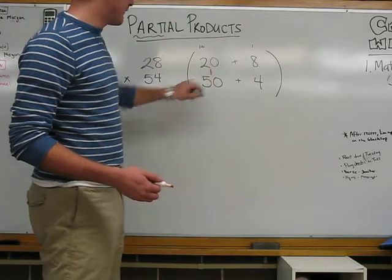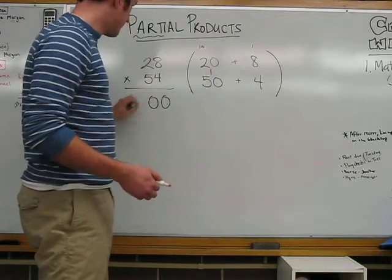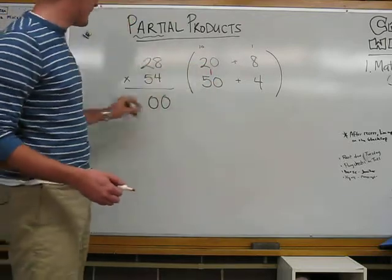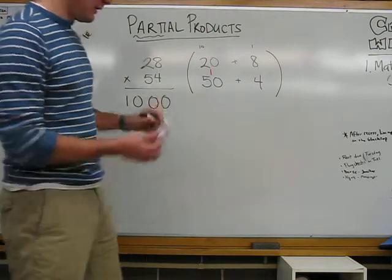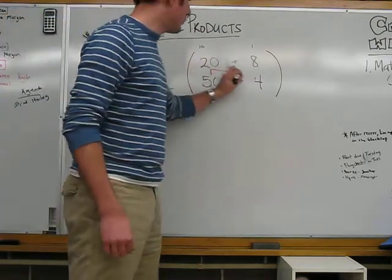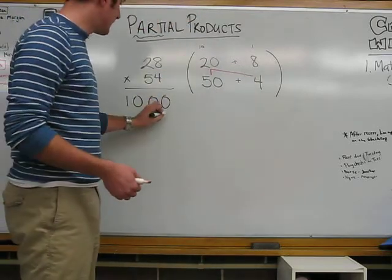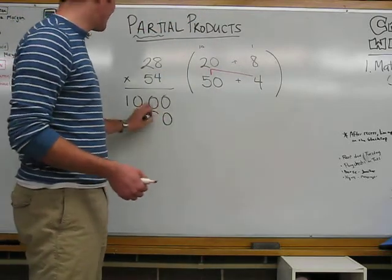Now, if you remember your zeros trick, we have two zeros. So, I'm going to write those down. 2 times 5 is 10. So, that's 1,000. Next, we're going to multiply 20 times 4. Again, you have a 0. 2 times 4 is 80.